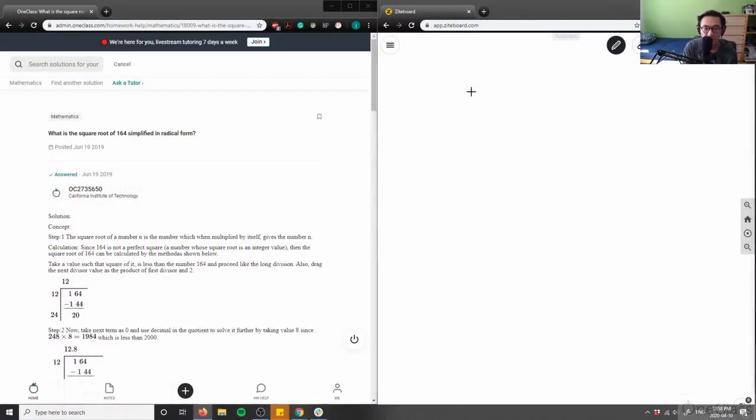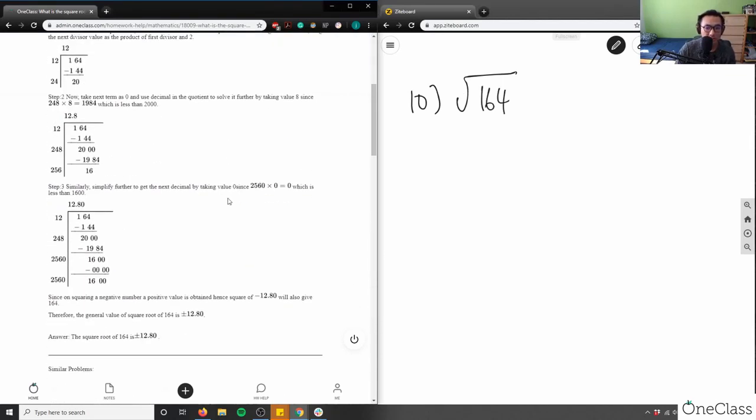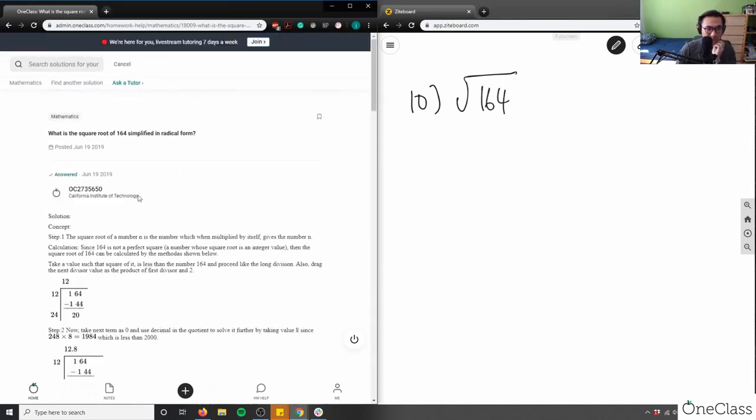So this is question 10. What is the square root of 164 in simplified radical form? Square root of, so this is the square root of 164 in radical form. So it's saying what is it in radical form, simplified radical form?